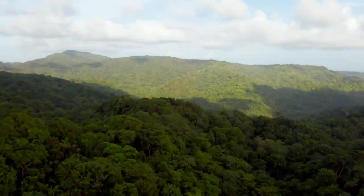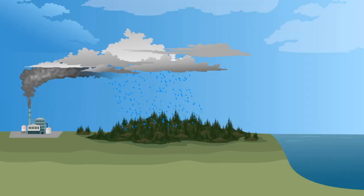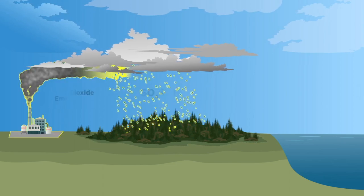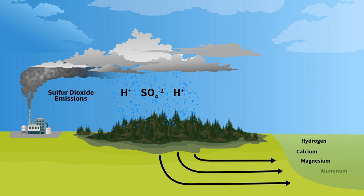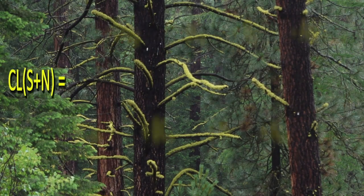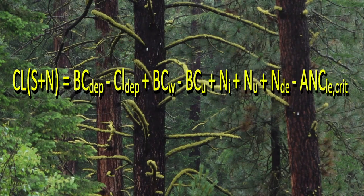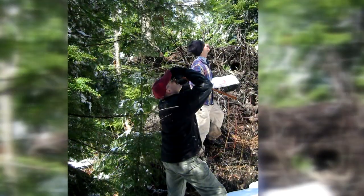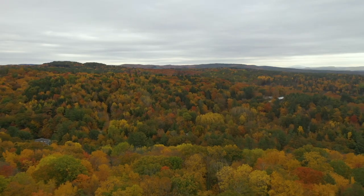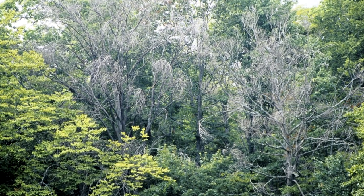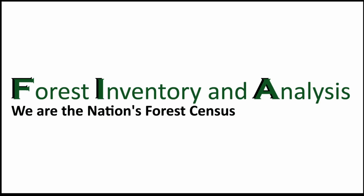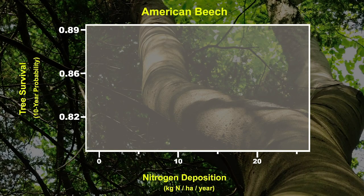Critical loads for trees or forests are estimated in a variety of ways. One way scientists calculate critical loads is by using models that account for inputs to and outputs from a forest ecosystem. An example of such a model is the Simple Mass Balance or SMB model, which is used to estimate critical loads of nitrogen and sulfur deposition. Using such models, scientists can determine when nitrogen or sulfur deposition levels are beyond what an ecosystem can absorb or buffer. A critical load can also be determined by relating deposition levels to the condition of trees across a landscape. For example, forest inventory and analysis program data on American beech indicates that its survival rate is negatively impacted when nitrogen deposition levels are greater than 10 kilograms per hectare per year.